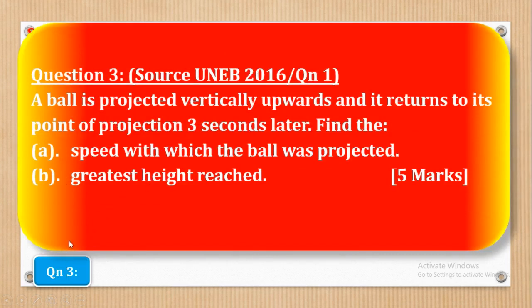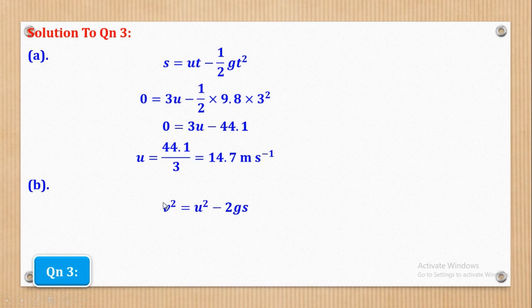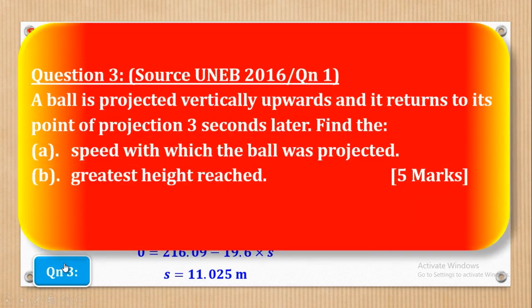For part B, they want the greatest height reached. At maximum height, final velocity is 0. Using the third equation of motion: V is 0, U is 14.7, G is 9.8. Solving for S gives the maximum height equal to 11.025 meters.